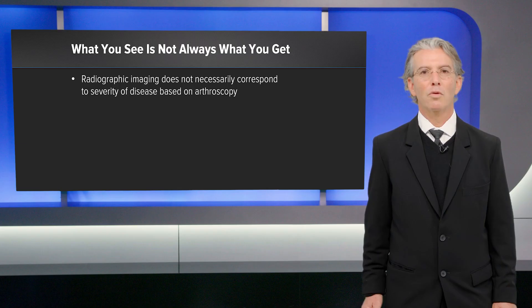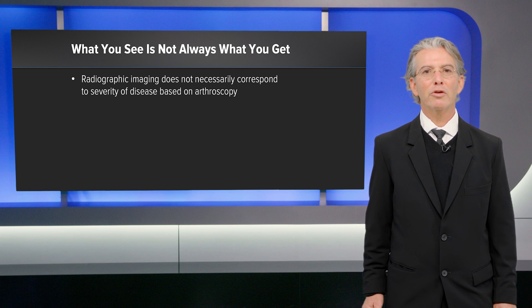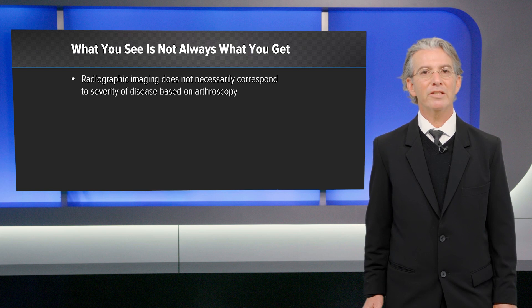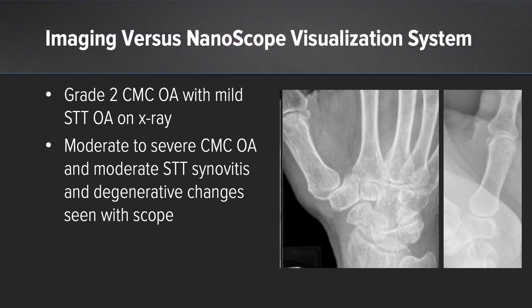What you see is not always what you get. Radiographic imaging does not always correspond with the severity of disease based on arthroscopic findings. Here you see a patient with minimal radiographic findings of CMC and STT arthritis.